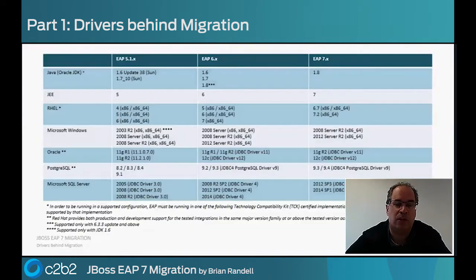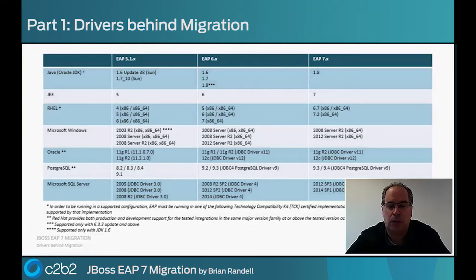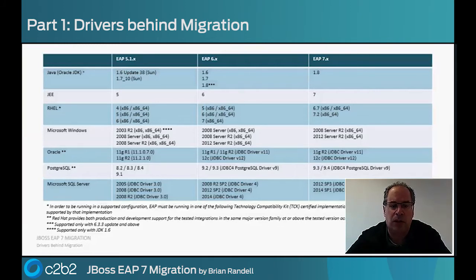Moving on to the dependencies slide — this is a key slide in terms of working with all the other areas you might work with in your business. EAP7 uses all the modern technologies: it runs on RHEL 7, requires Java 1.8, and all the most recent technologies. It's always sensible to be on a configuration that is commonly used and fully tested. Red Hat has its supported configuration sheet, and being on one of those configurations means Red Hat can support it better, and the community is more likely to share that setup, giving you better support overall.